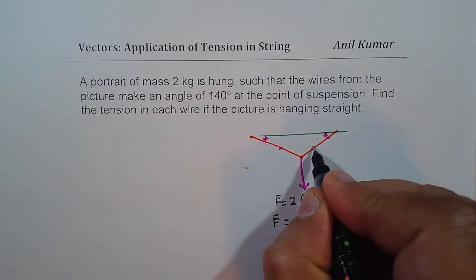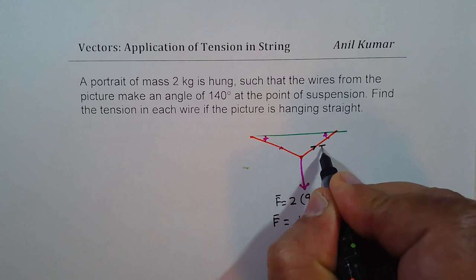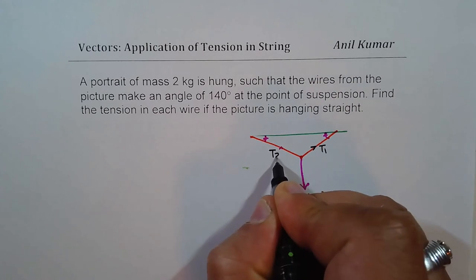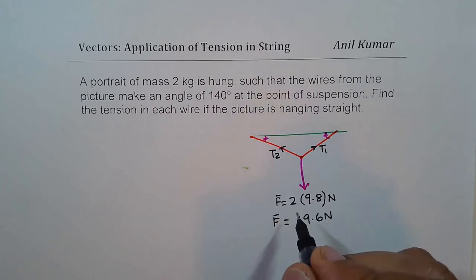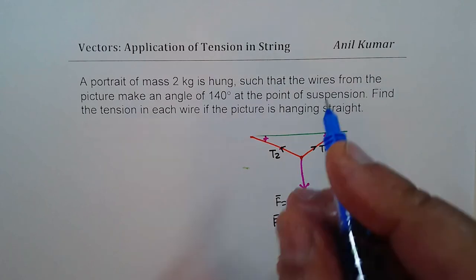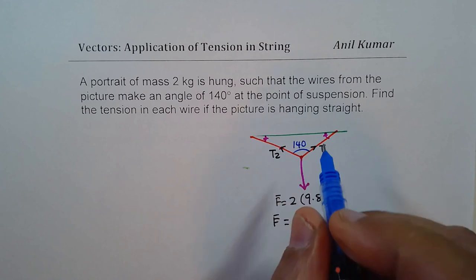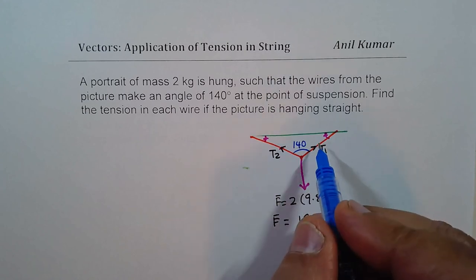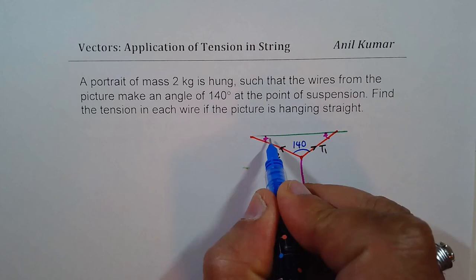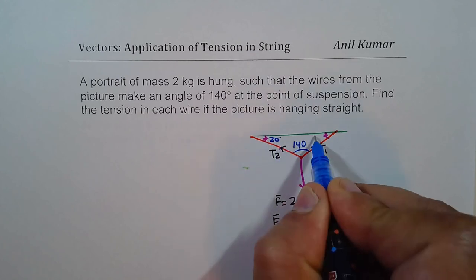Let the tension in these strings be T1 and T2. Now, we are given angle of 140 degrees here in the center. So the other two angles are going to be 20 each. So these are 20 degrees each.